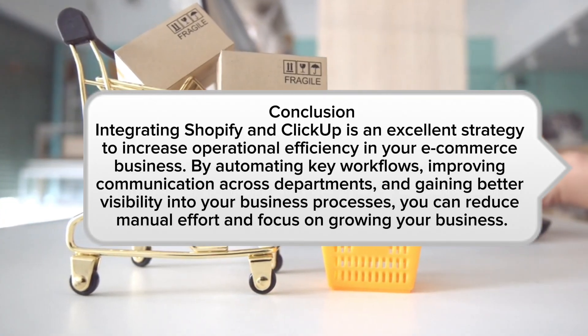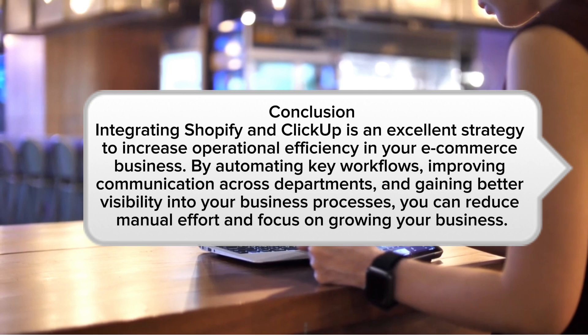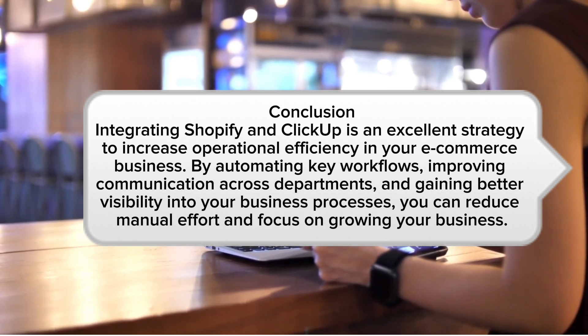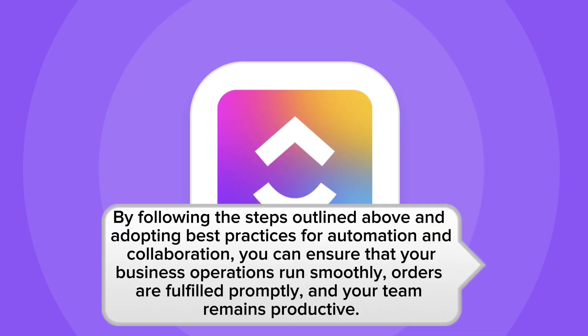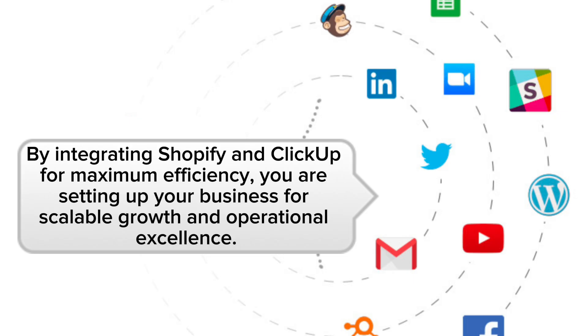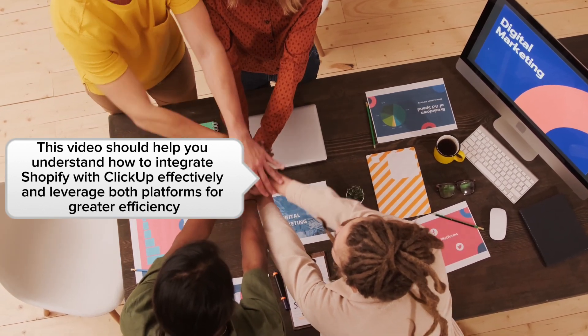Conclusion. Integrating Shopify and ClickUp is an excellent strategy to increase operational efficiency in your e-commerce business. By automating key workflows, improving communication across departments, and gaining better visibility into your business processes, you can reduce manual effort and focus on growing your business. By following the steps outlined above and adopting best practices for automation and collaboration, you can ensure that your business operations run smoothly, orders are fulfilled promptly, and your team remains productive. Using integration tools like Zapier makes the process simple, even for those with minimal technical experience. By integrating Shopify and ClickUp for maximum efficiency, you are setting up your business for scalable growth and operational excellence.